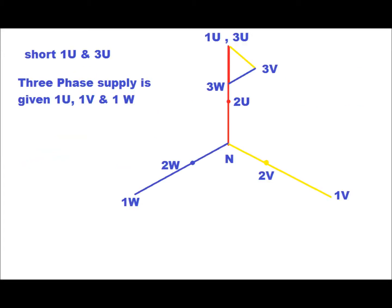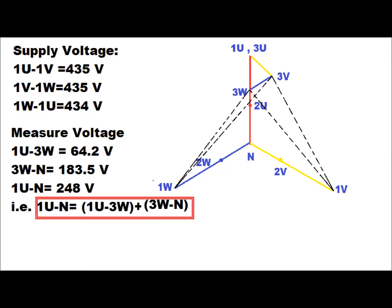For the vector group test, we short 1U and 3U — that is red phase of primary winding with red phase of tertiary winding — and three phase supply is given to the 1U, 1V, 1W terminals, that is red, yellow, and blue phase of the primary winding. The supply voltage measured between red-yellow, yellow-blue, and blue-red phases is 435 V, 435 V, and 434 V respectively.